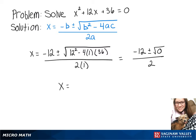Since plus 0 and minus 0 are the same thing, we'll just get one answer here. So negative 12 divided by 2 gives us negative 6.